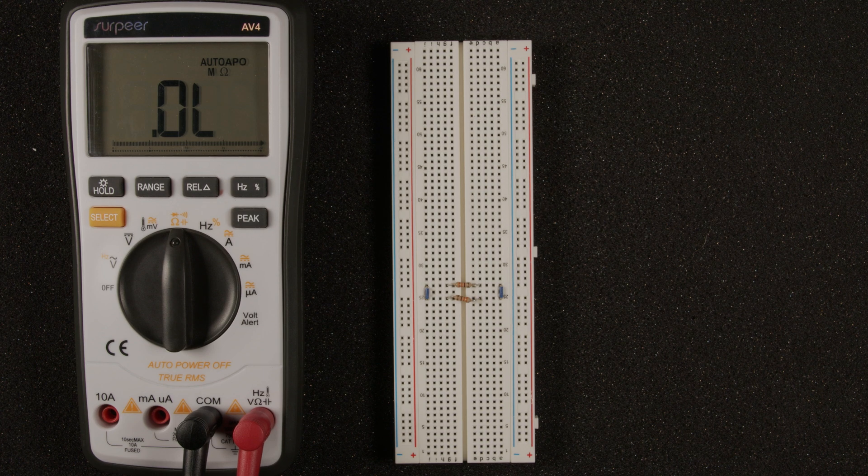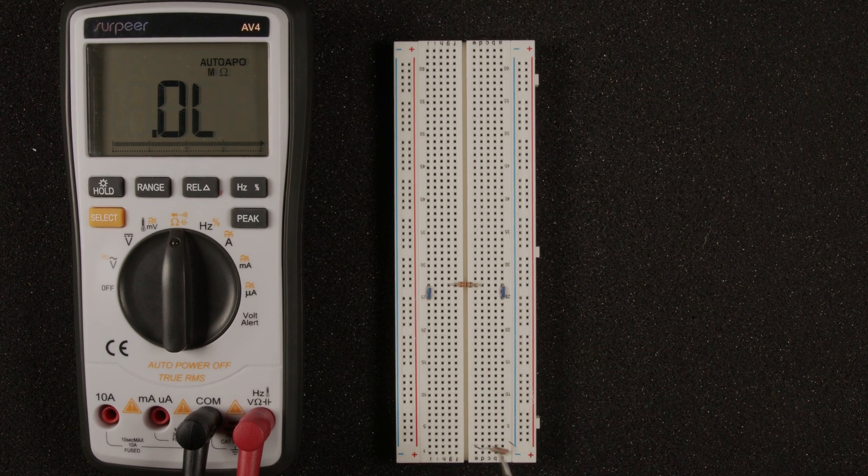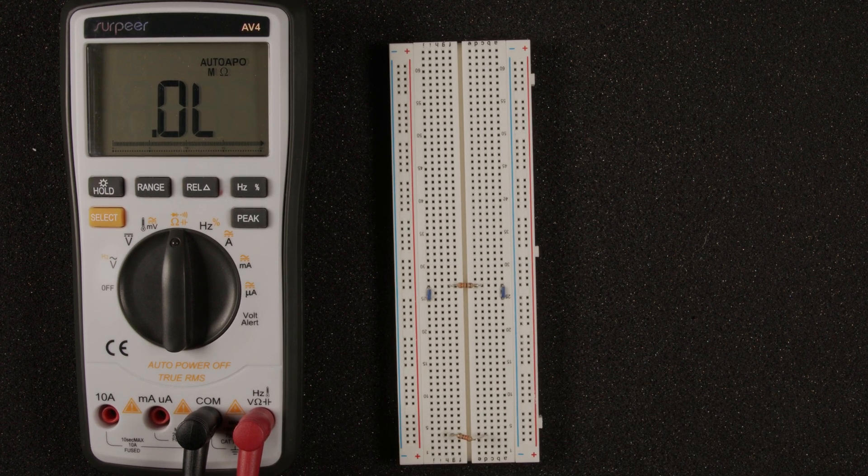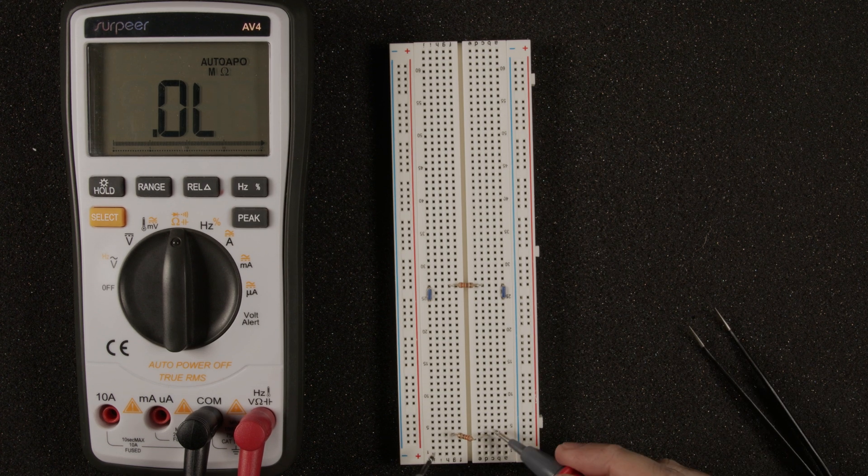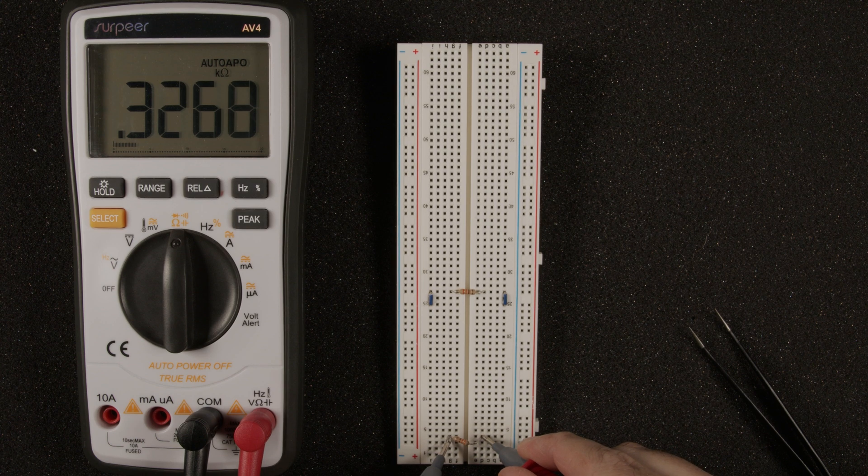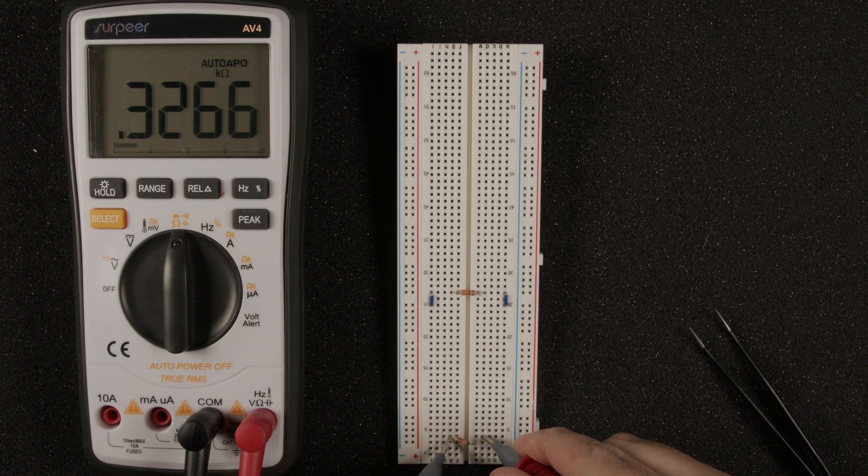And we do not want to do this because it will give us the incorrect value. The easiest way to measure the resistance of just the resistor is to make sure it's pulled out of our circuit, and we can put it down here somewhere where it's not connected, and then we can probe either side of the resistor to see that this was a 0.3 kilo ohm, or 300, basically a 330 ohm resistor.